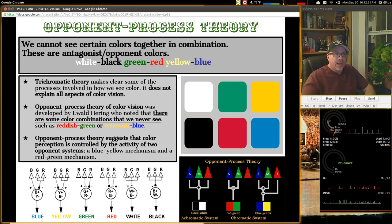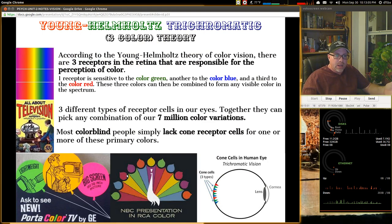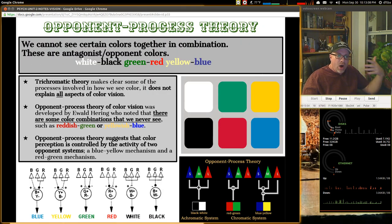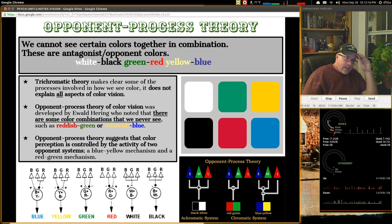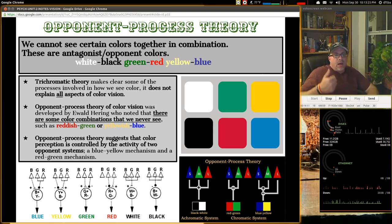Trichromatic makes clear some of the processes involved in how we see color. It does not explain all aspects of color vision. So that's a weakness here in the trichromatic theory. So trichromatic's here. And they're saying, does it tell us to explain all aspects of color vision? It does not. Opponent process theory kind of steps in to help that. So this was developed by Ewald Herring, who noted that there are some color combinations that we never get to see. We can never make sense of it. A reddish green. Or yellowish blue. It just doesn't seem to work.